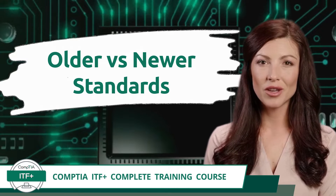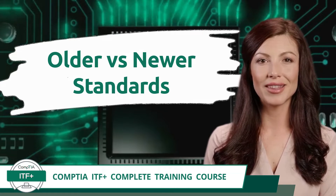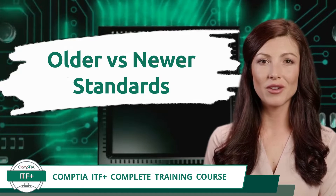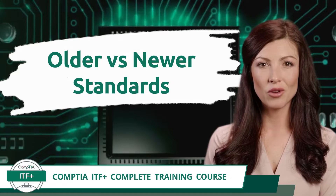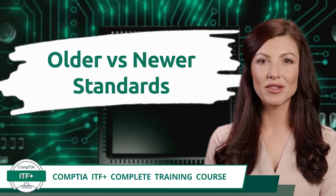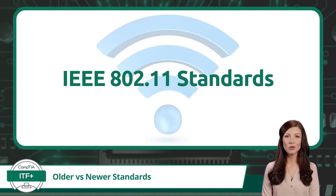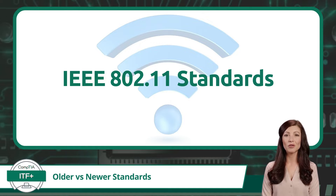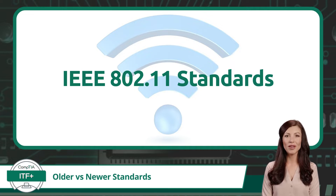CompTIA ITF+ complete training course, exam objective 2.8: given a scenario, install, configure, and secure a basic wireless network. The first Wi-Fi standard came about in 1997 with the introduction of the IEEE 802.11 standard. With Wi-Fi, we could now connect to the internet and communicate without the need for physical cables, and over the past few decades this has completely transformed the way we live and work.